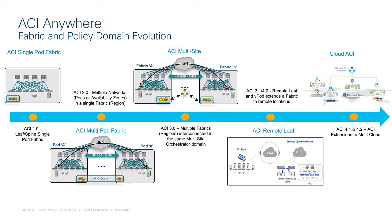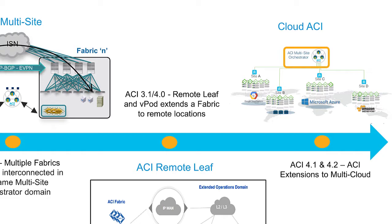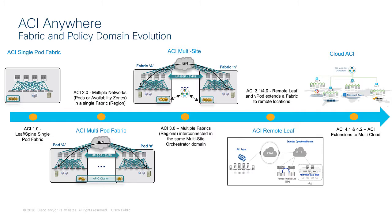The last step of the ACI Anywhere journey is Cloud ACI — an architecture that closely resembles ACI Multisite, with a Multisite Orchestrator managing different ACI sites. The main difference is that not all sites in Cloud ACI are physical on-prem ACI data centers; some are public cloud resources deployed in AWS or Microsoft Azure. In the future, integration with other clouds, starting with the Google Cloud Platform, is also planned.